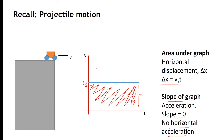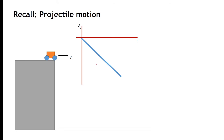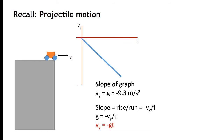In order to fully solve for the projectile, we have to combine this horizontal motion with a vertical motion. Here, we are treating all downward motion as negative. The slope of this graph is negative 9.8 meters per second squared. Since slope is rise over run, we can see that G equals negative Vy over T, where negative Vy is our rise — or actually our fall — and T is our run. From this definition of slope, we get an important relationship: Vy equals negative Gt.